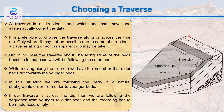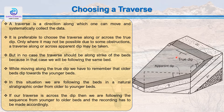Now coming to choosing the traverse. A traverse is the direction along which one can move and systematically collect data. It is preferable to choose the traverse along or across the true dip direction. As we can see, this is the terrain, this is the true dip direction, and this is across the true dip direction. Taking the traverse along the true dip direction gives us the maximum number of features and beds. But if you cannot take the traverse along the true dip direction, then take it as close as possible to the true dip direction.